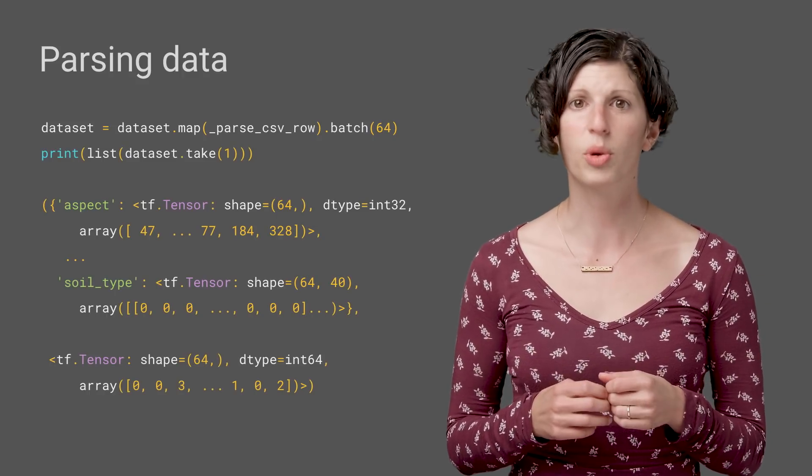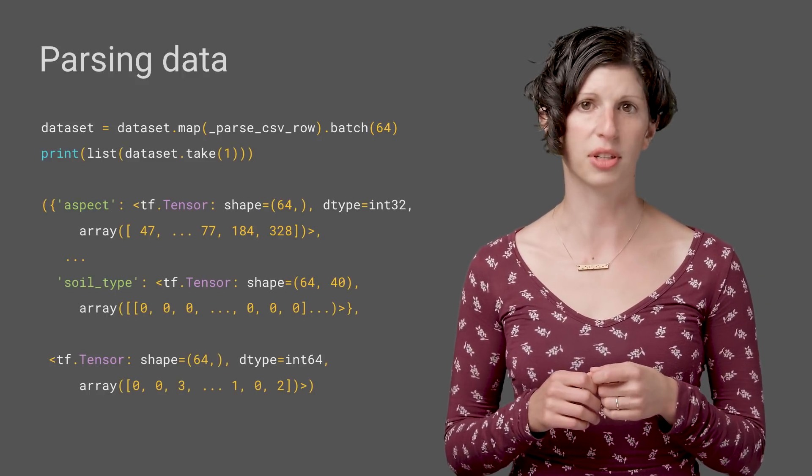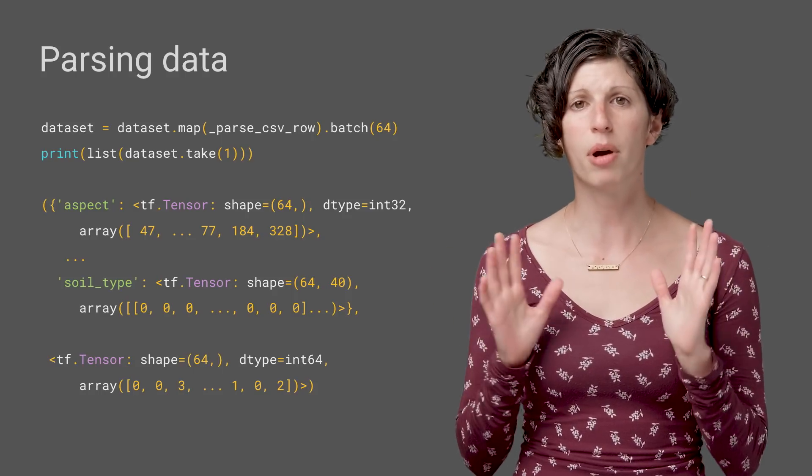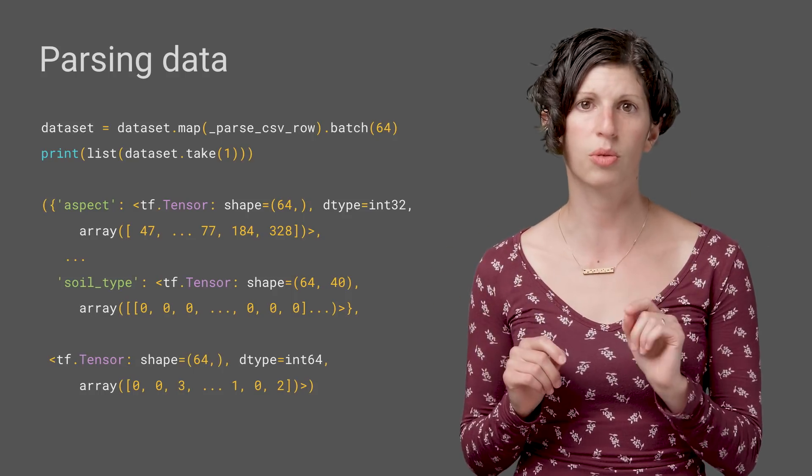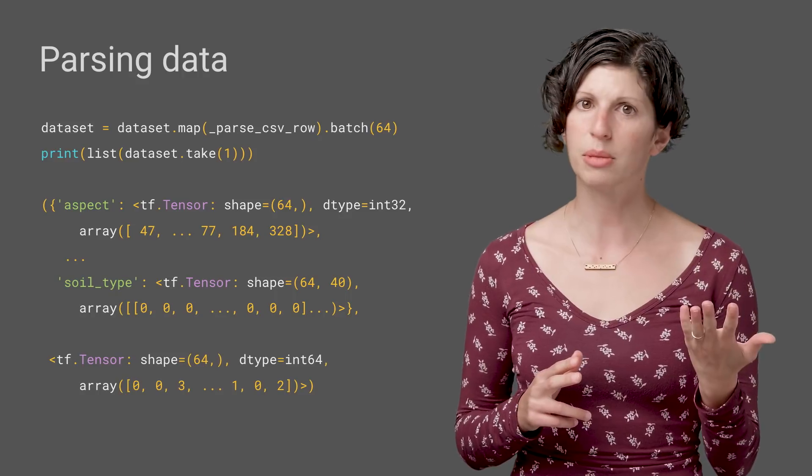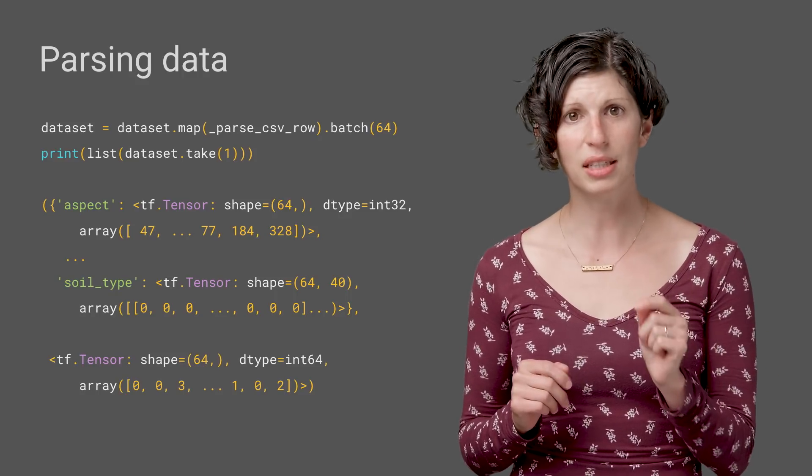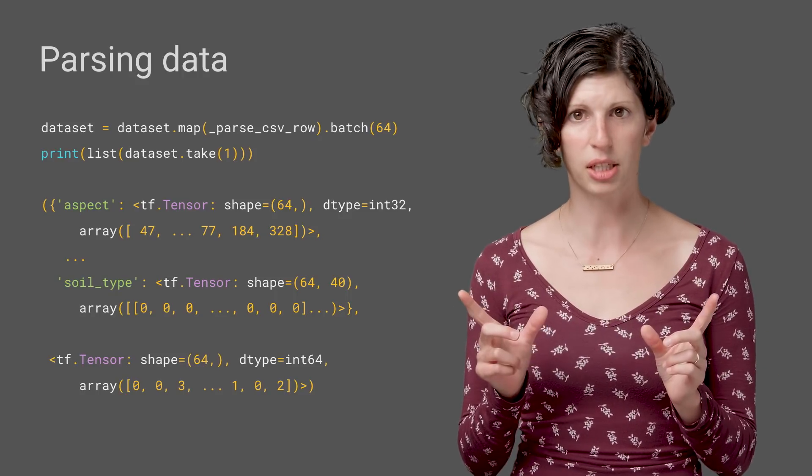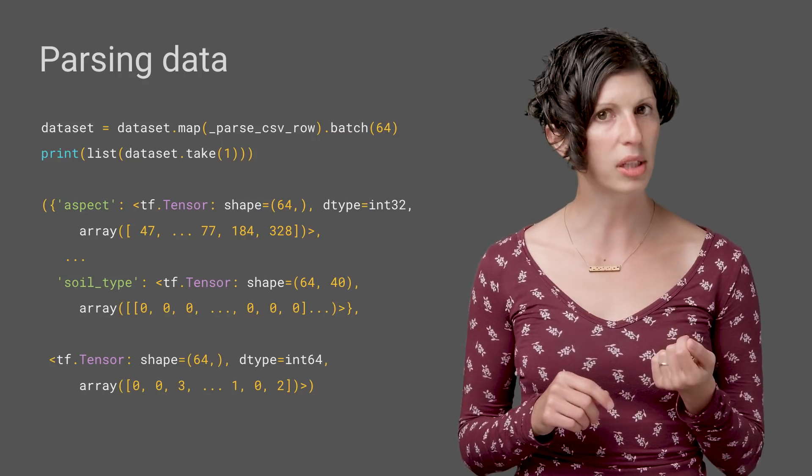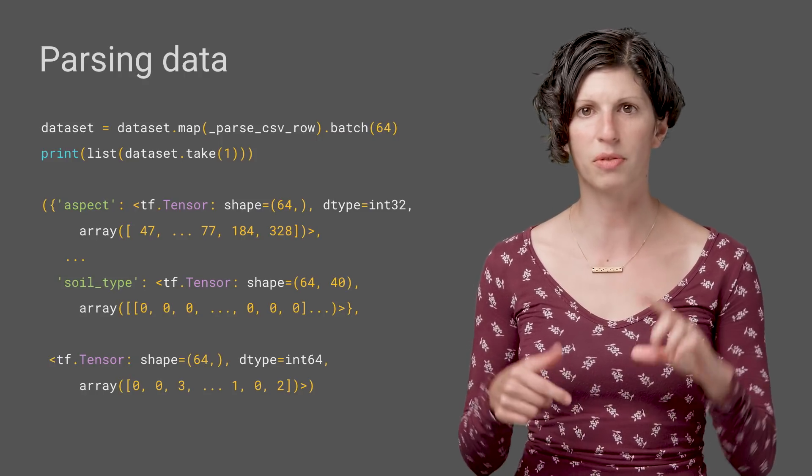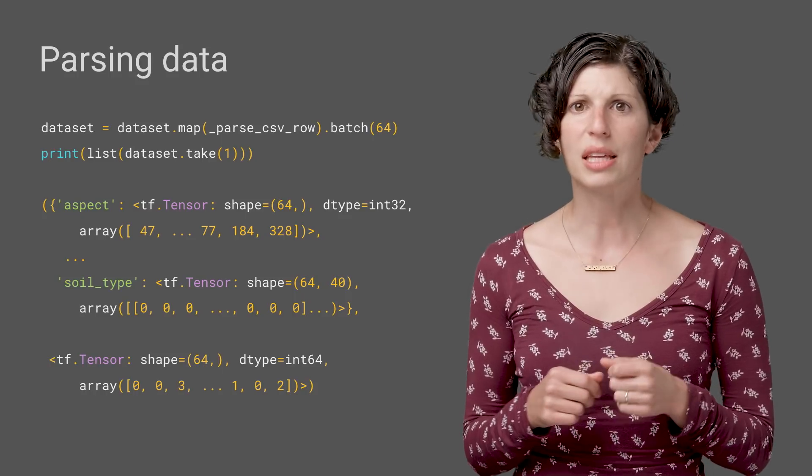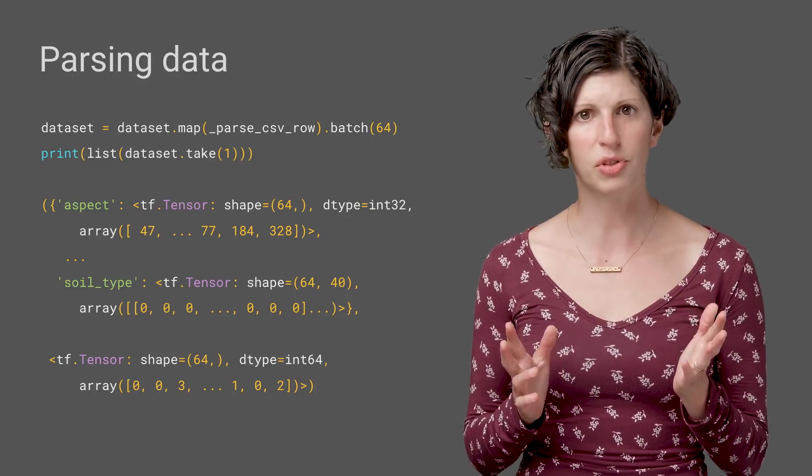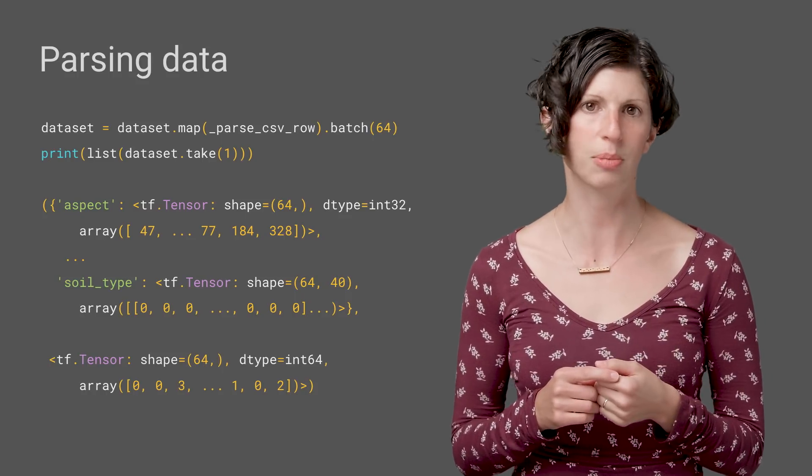Because we are using eager execution, we can check to see what our data looks like after this, and you can see that now we have parsed dictionaries of ints with nice human-readable names. Each feature has been batched, so a feature that is a single number is a length 64 tensor, and we can see that our conversion of soil type results in a tensor with a shape of 64 by 40. We can also see that we have a single tensor for the class labels, which has the category indices as expected.